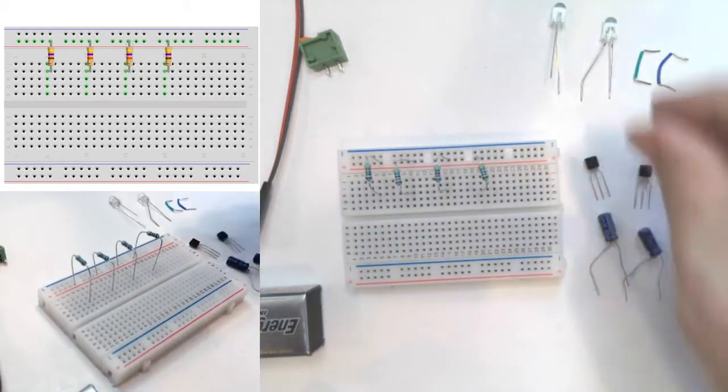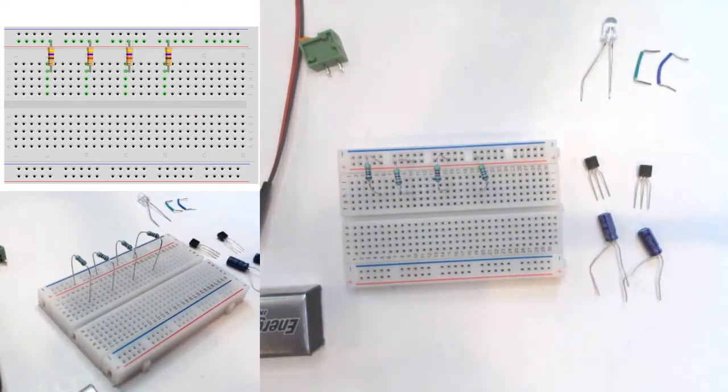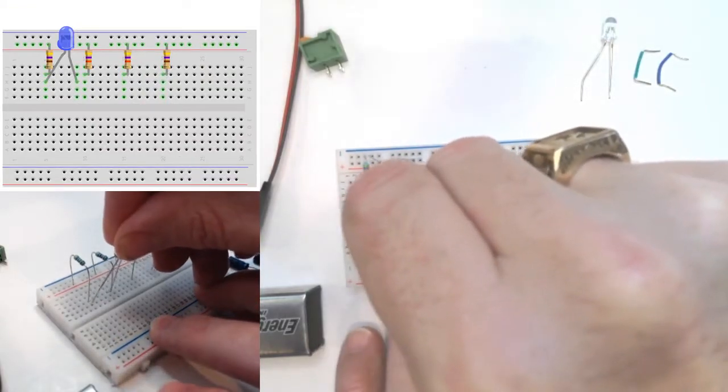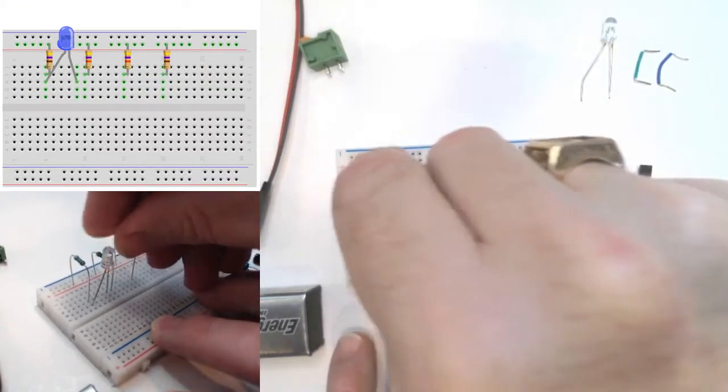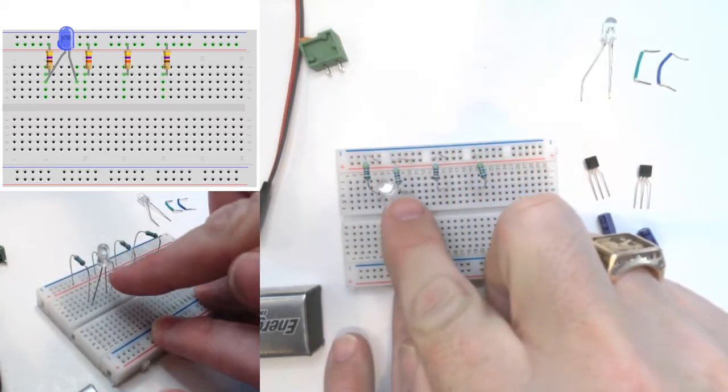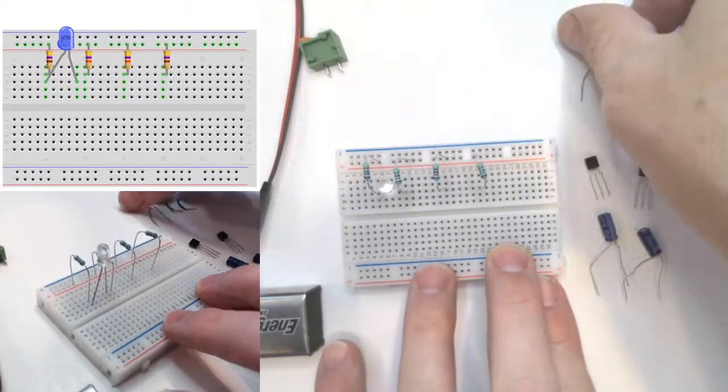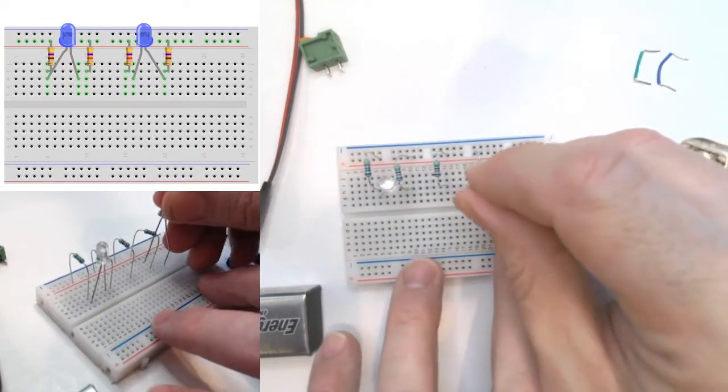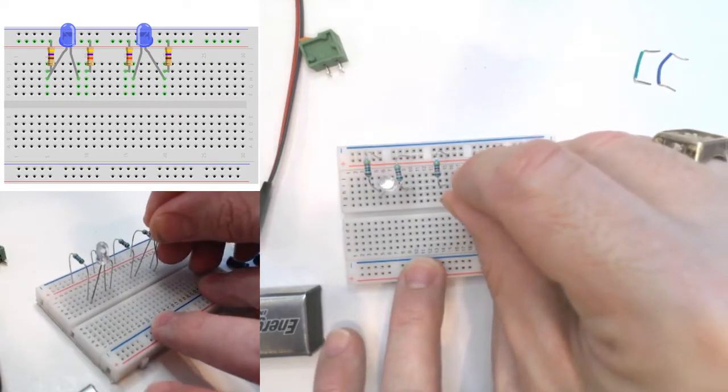Next, we're going to connect the LEDs from the 470 ohm resistor to one row off of the 47k ohm resistor, where we want the flat side of the LED next to the 47k ohm resistor. We'll do the same thing on this side.